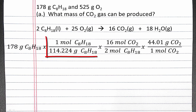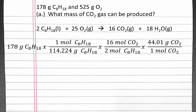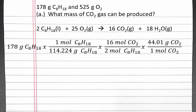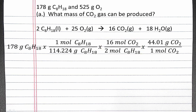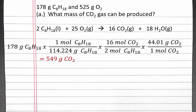Our first step is to use the molar mass of C8H18 to convert from grams to moles. Then we can use stoichiometry, or the coefficients in the balanced chemical equation, to convert from moles of C8H18 into moles of carbon dioxide gas. And then we can use the molar mass of carbon dioxide gas to convert from moles to grams of carbon dioxide. If you put this in your calculator, you should get 549 grams of carbon dioxide.